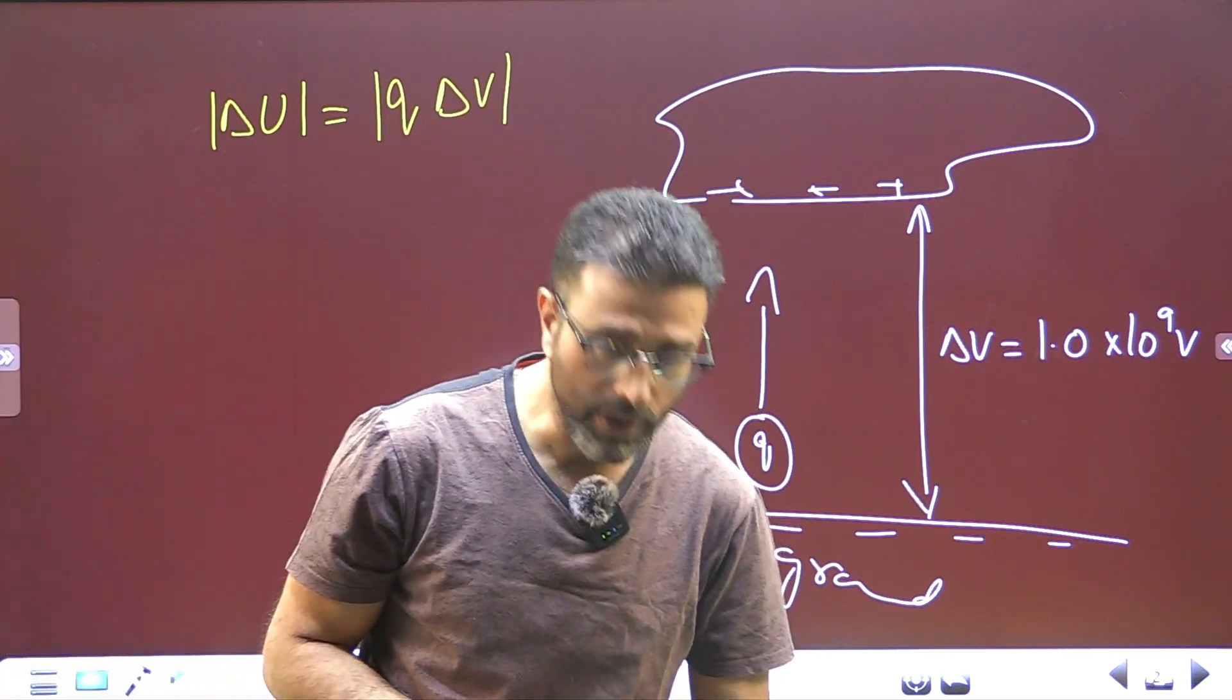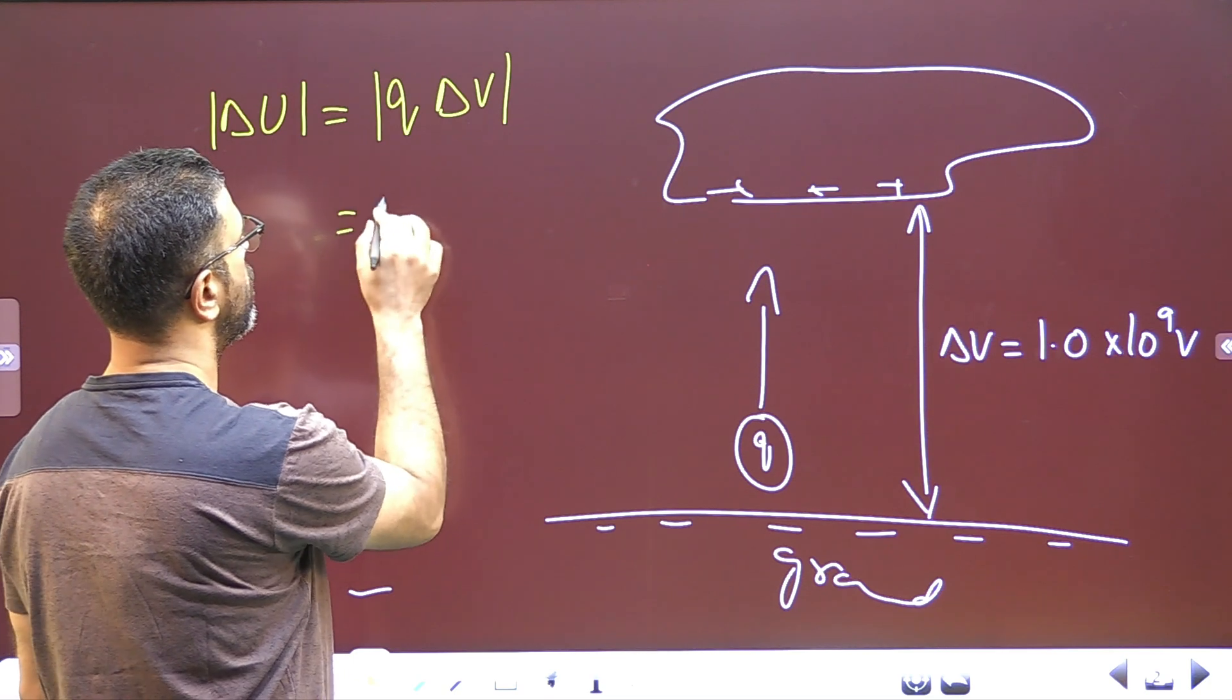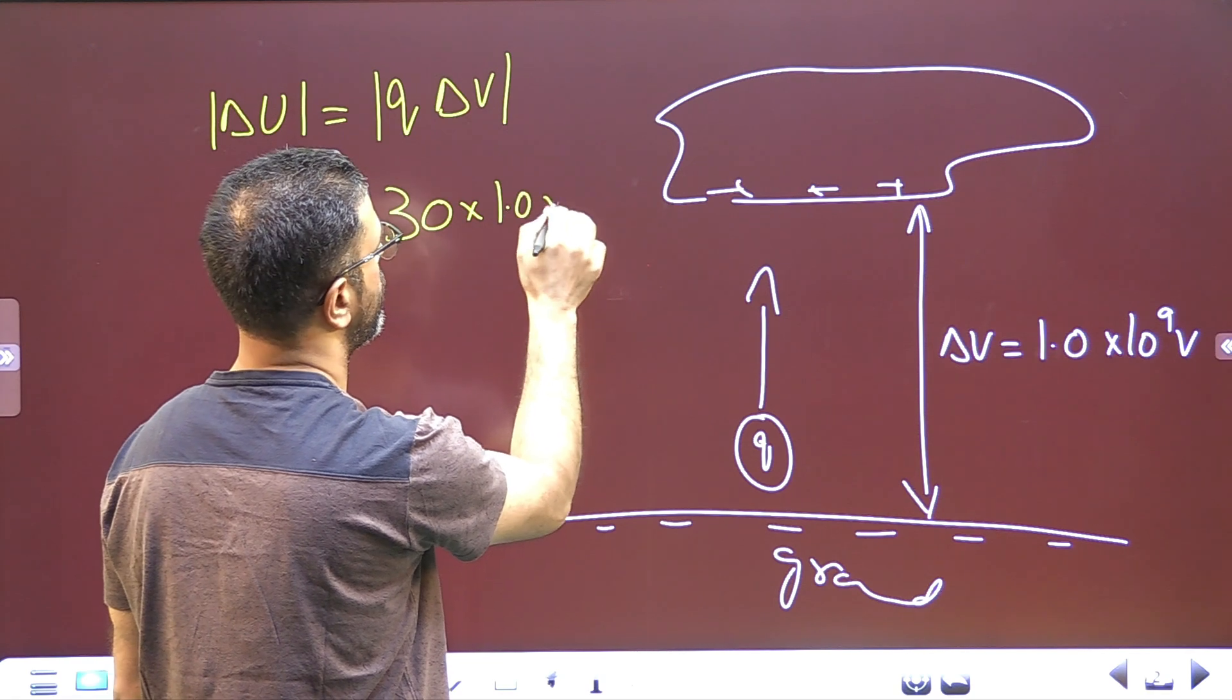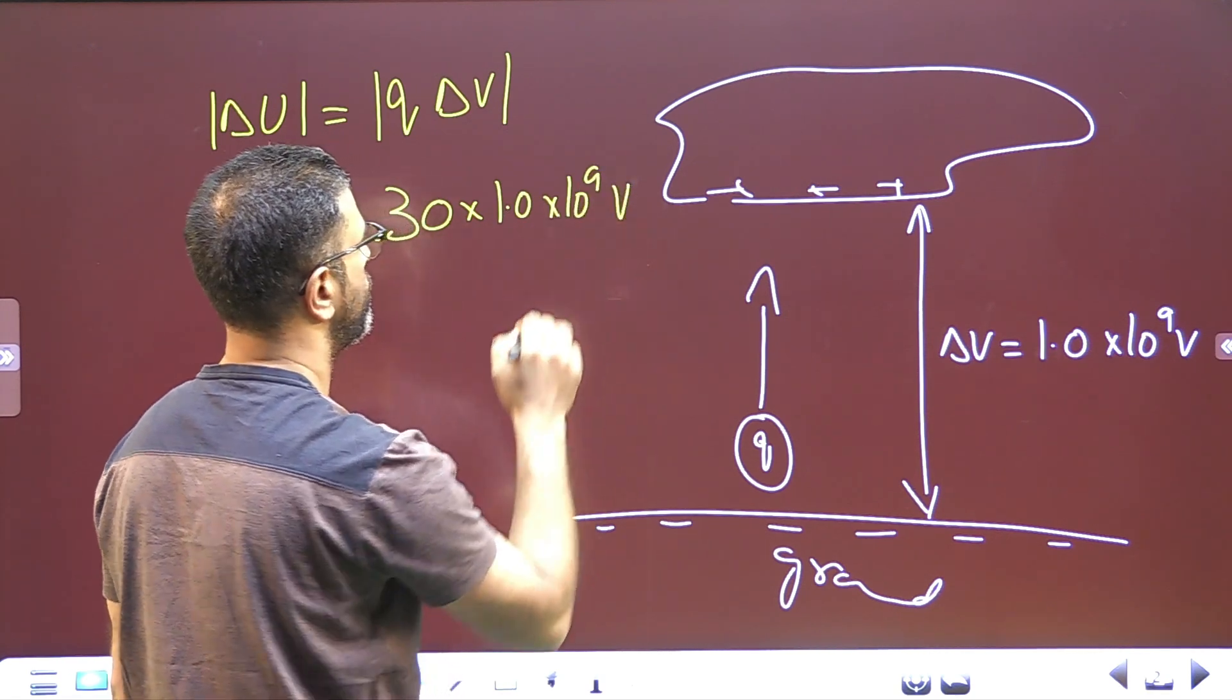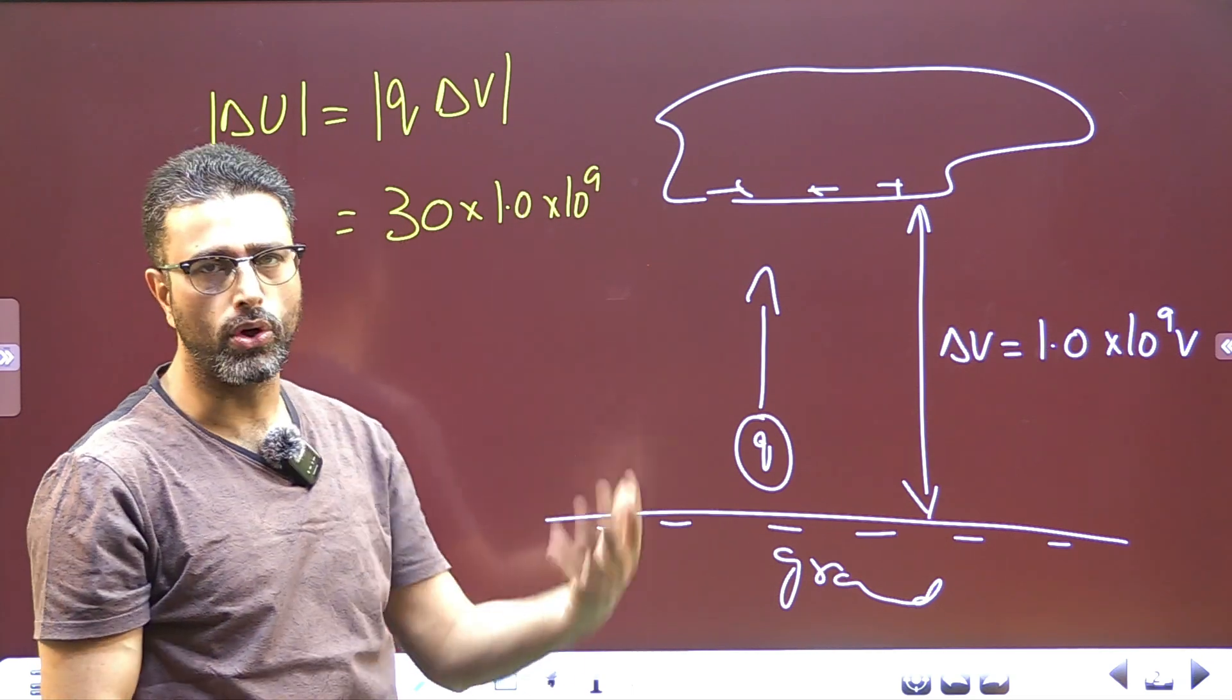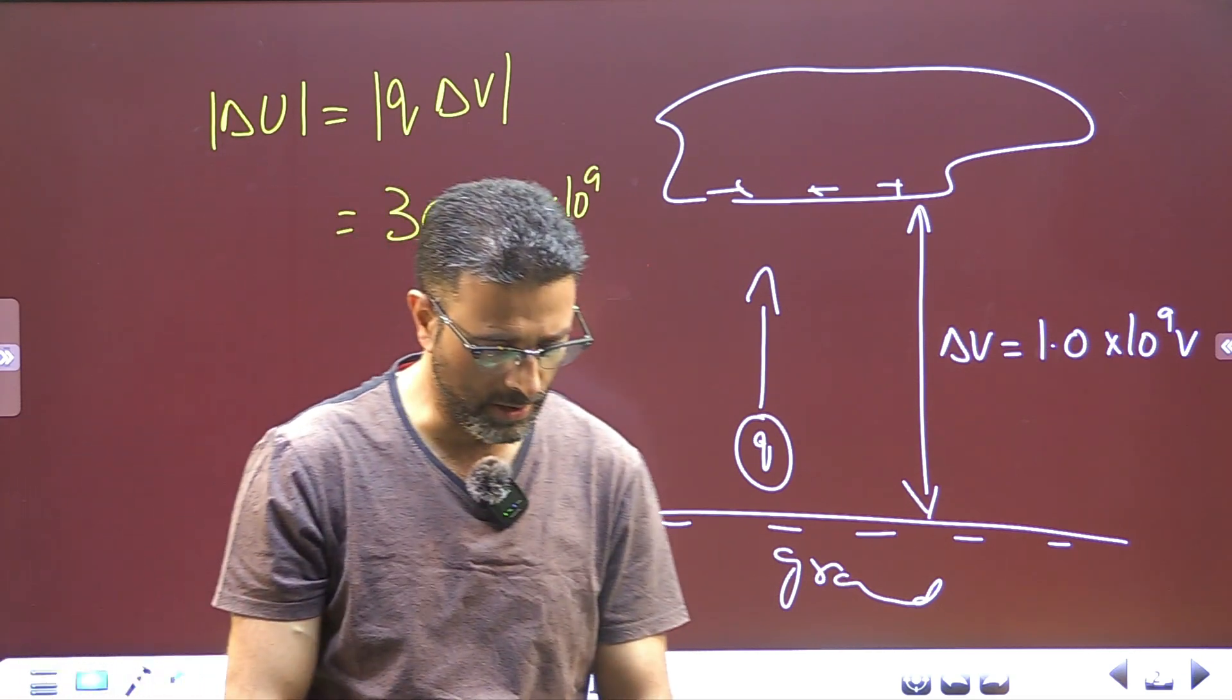Charge transferred is given 30 coulombs. So, 30 coulombs into delta V, potential difference is 1.0 into 10 to the power 9 volts. This is in coulombs, this is in volts, so unit will be in SI system, joules.